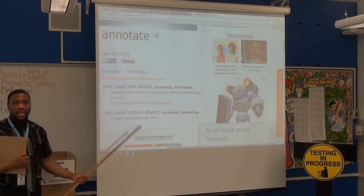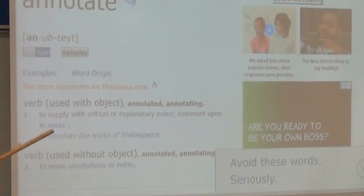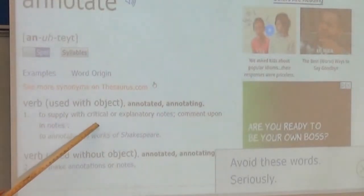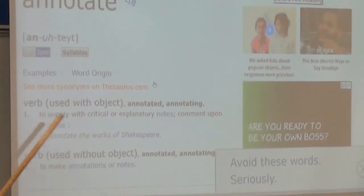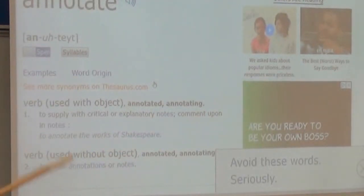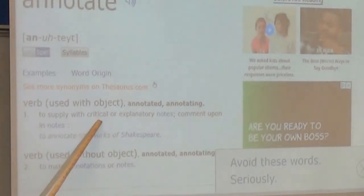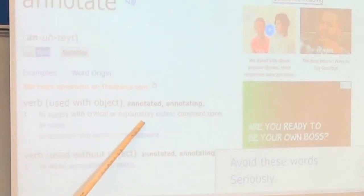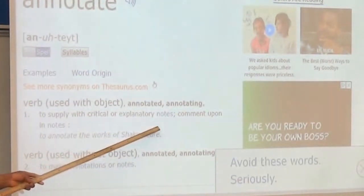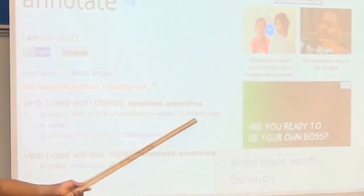Or to comment upon in notes. What does it mean to supply? To give. What's critical? Crucial, important — probably a certain depth of thinking or important level of thinking. What's explanatory? To explain. So we're supplying with a certain depth of thinking, importance, and explanation in notes. When we break all these components down, this is basically saying: to explain with a certain level of important thinking in notes, and we're giving this on some type of commentary.